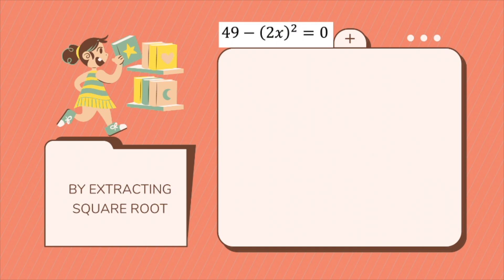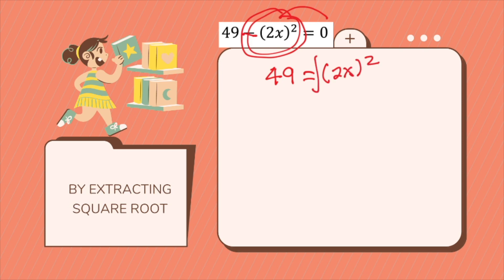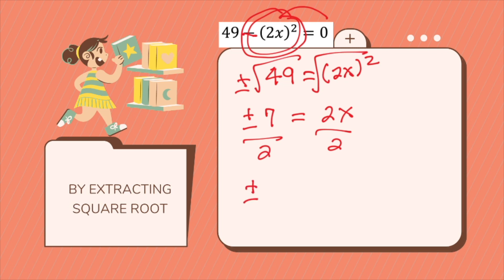Let's take another example. We have 49 minus 2x squared. Since this is negative 2x squared, we transfer it to the other side instead of 49. So we have 49 equals 2x squared. Take the square root: plus or minus square root of 49, which is 7, equals 2x. Then divide by 2, giving x equals plus or minus 7 over 2.